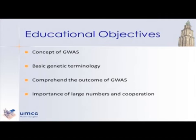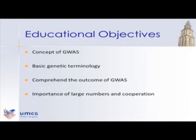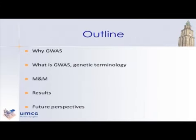The educational objectives of this talk will be the concept of genome-wide association studies — we call it GWAS — and some basic genetic terminology. I just heard some explanation about GWAS and I'll try to explain it in a little bit different manner. We'll comprehend the outcome and the importance of large numbers and cooperation when doing these kinds of studies. First I'll explain why we're doing this, what it is, then the study and the materials and methods, results, and what we can do with these results.